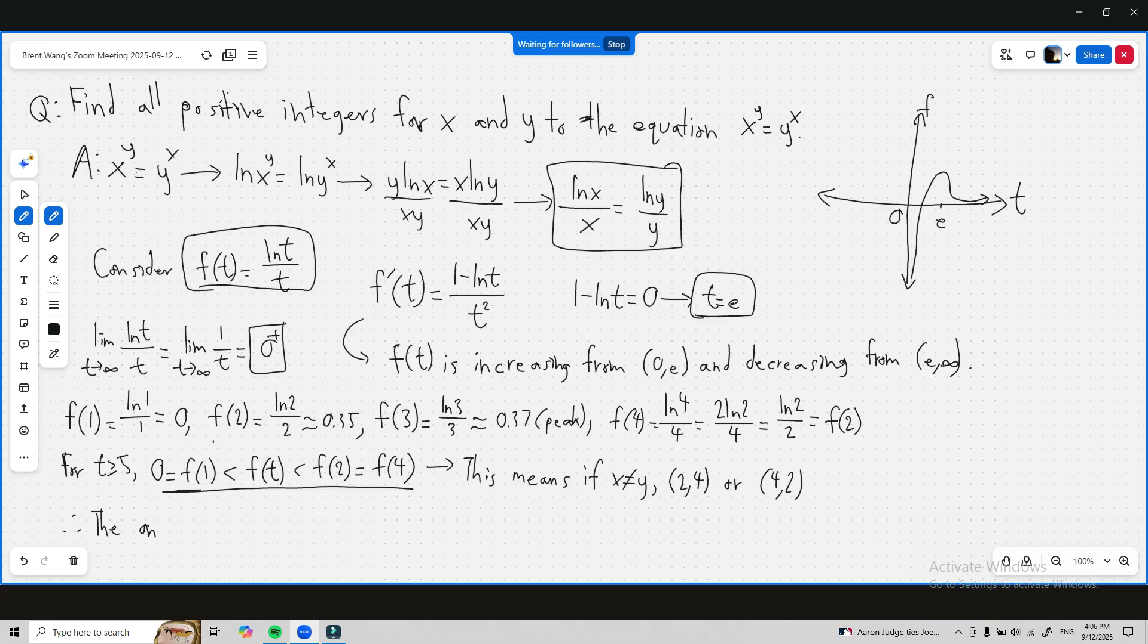Therefore the only solutions to x^y equals y^x are x equals y, x equals 2 and y equals 4, and x equals 4 and y equals 2.